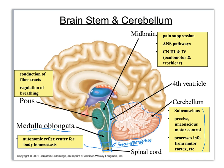We get up into this section here which is called the midbrain. You've got your functions for the midbrain and your functions for the medulla oblongata. Please try to remember also that the cranial nerves are located on the midbrain. And then this thing that looks like an apple sitting on the front is called the pons — conduction of fiber tracts and regulation of breathing.